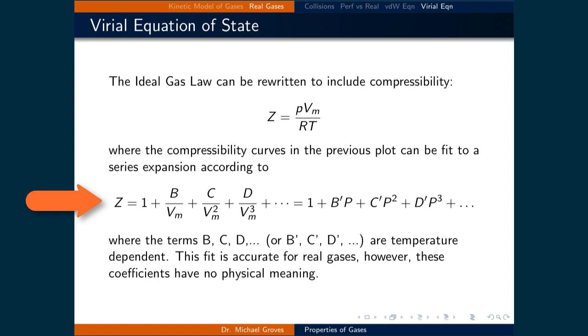Using the molar volume, the series goes 1 plus B over the molar volume plus C over the molar volume squared plus D over the molar volume cubed, etc. While for the pressure, the series goes 1 plus B prime times the pressure plus C prime times the pressure squared plus D prime times the pressure cubed, and so on.